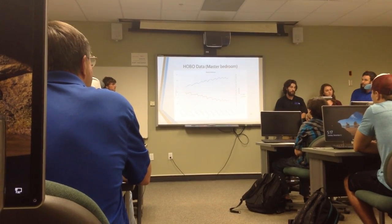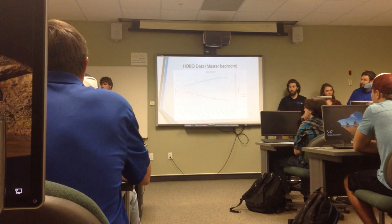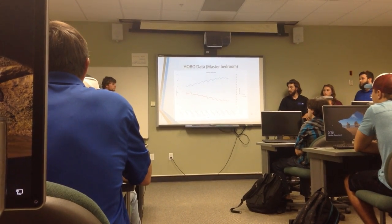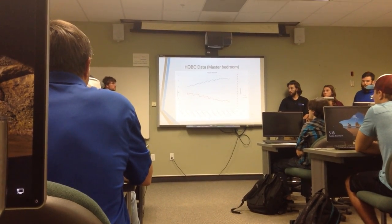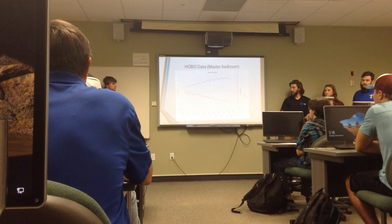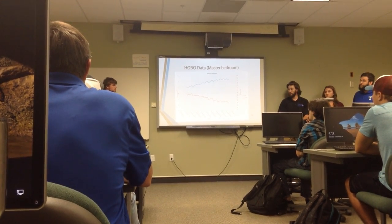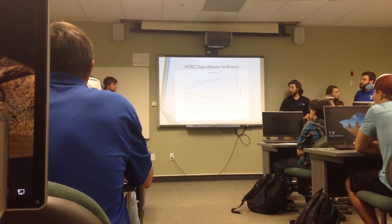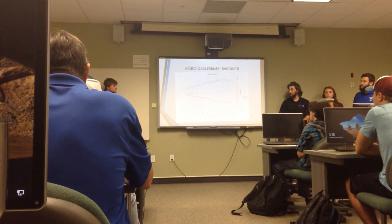The master bedroom is furthest away from bedroom number one, so it behaves the exact opposite with humidity. The HOBO monitor is also placed on a south-facing wall, and that's why you see an increase in temperature there.